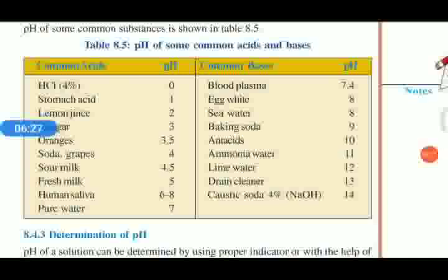Some common bases: blood plasma, 7.4, the blood in our body is a base. Egg white is a base, pH value is 8. Seawater, pH value is 8. Sodium hydroxide, its pH value is 14. Lime water, its pH value is 12.